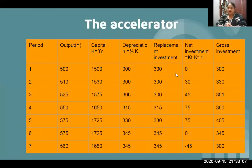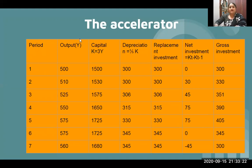The most important part to understand the entire acceleration theory is the table. Observe carefully: there are seven columns. Column 1 represents the period. Column 2 is output — income and output are interchangeable terms here. Column 3 is capital K, which equals 3Y. Column 4 is depreciation, which equals one-fifth of K.